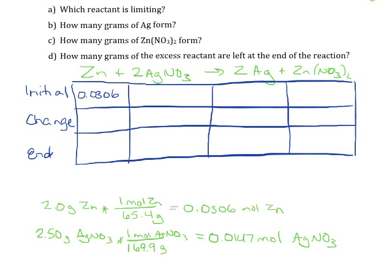That's going to go into the ICE table under Initial because those are the initial moles for my two reactants. We start with 0 moles of the products because they have not been formed yet, so it makes sense that we start with none. Remember that the change row has to do with the coefficients in the balanced reaction.